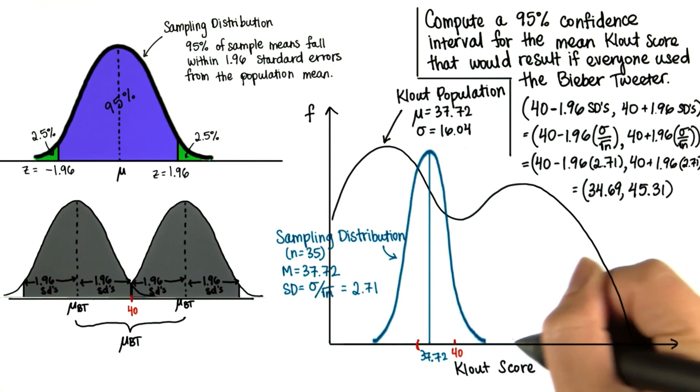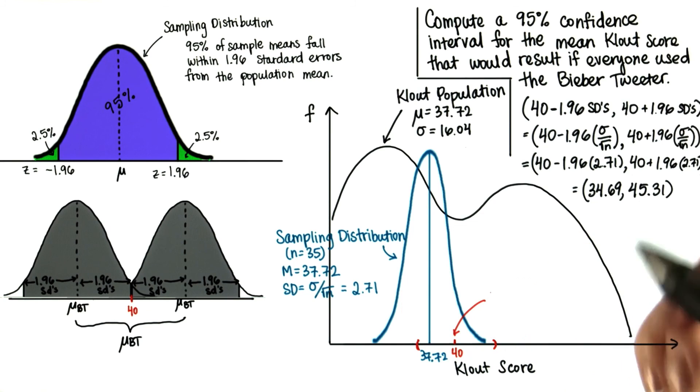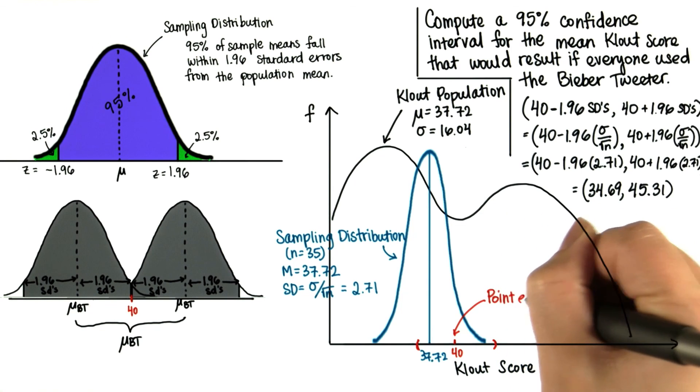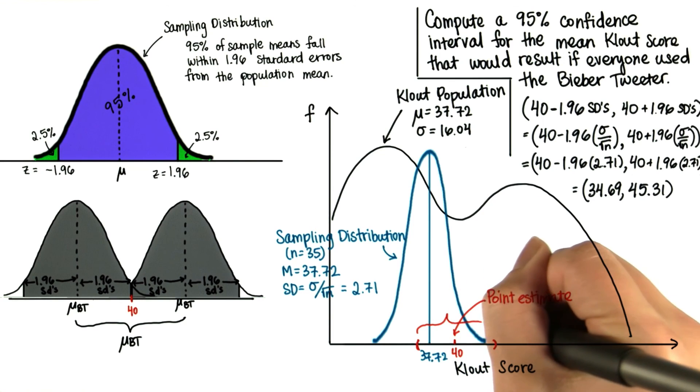So, our confidence interval for the population mean is something like this. So, if everyone were to use the Bieber tweeter, our point estimate is 40 and our interval estimate is our 95% confidence interval.